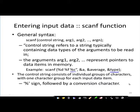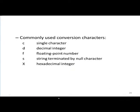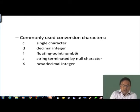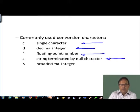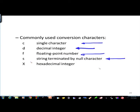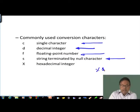The percentage sign means it is a conversion character. The commonly used conversion characters are: percentage d for decimal integers, percentage f for floating point numbers, percentage c for a single character, and percentage s for a string. When reading a variable as a string using percentage s, that string is always terminated by a null character.